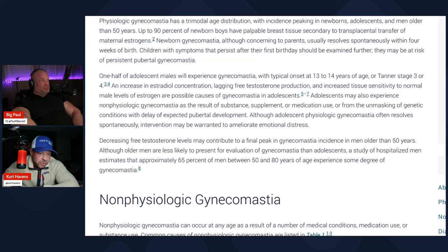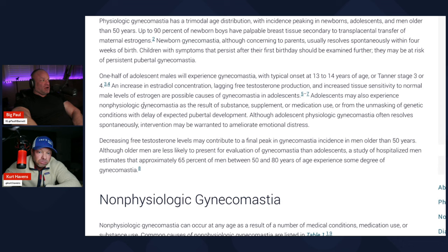One half of adolescent males will experience gynecomastia, with a typical onset of 13 to 14 years of age. An increase of estradiol concentration, lagging free testosterone production, and increased tissue sensitivity to normal levels of estrogen are the causes of gynecomastia in adolescence. I had pubescent gynecomastia — it got really bad in middle school, around 13 to 16, and then I got thin through high school and it went away.